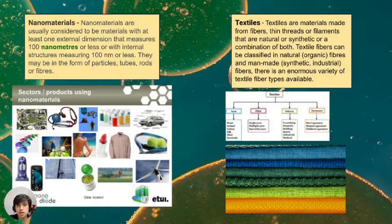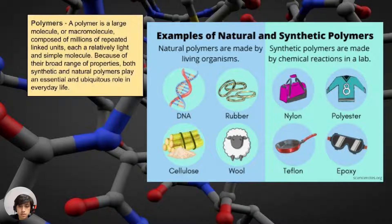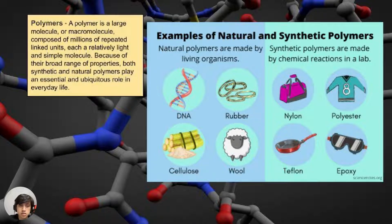Textiles are made from thin threads or filaments that are natural, synthetic, or a combination of both. The last group is polymers — large molecules or macromolecules composed of millions of repeated units, each being a relatively light and simple molecule. Examples include wool, cellulose, nylon, polyester, and epoxy.